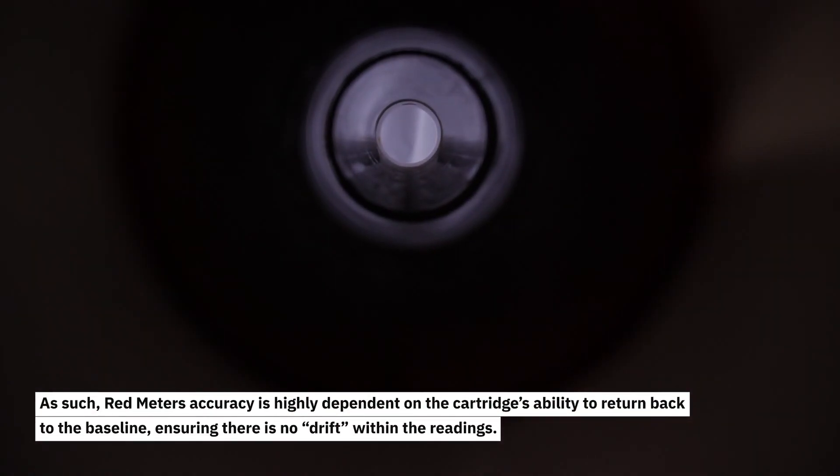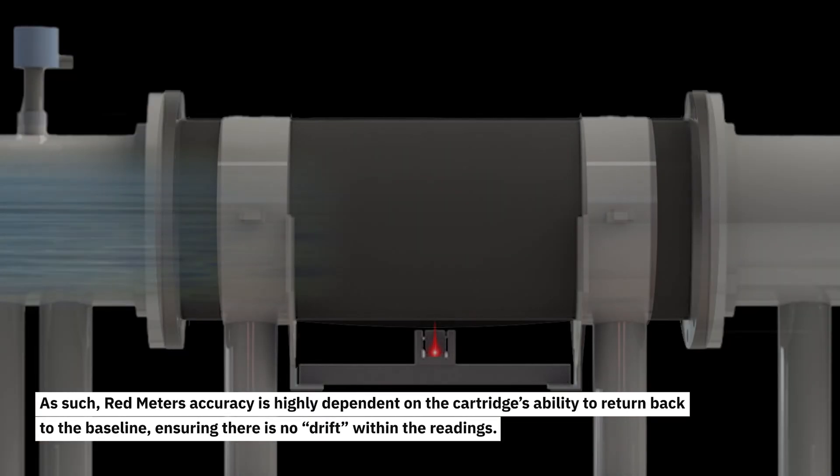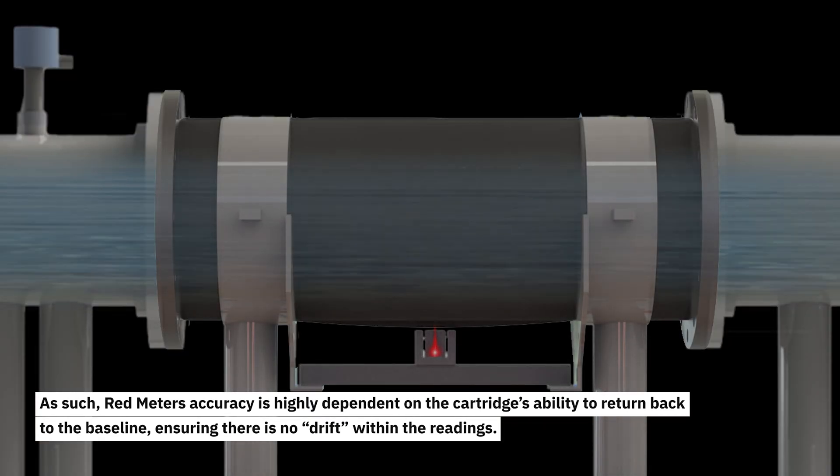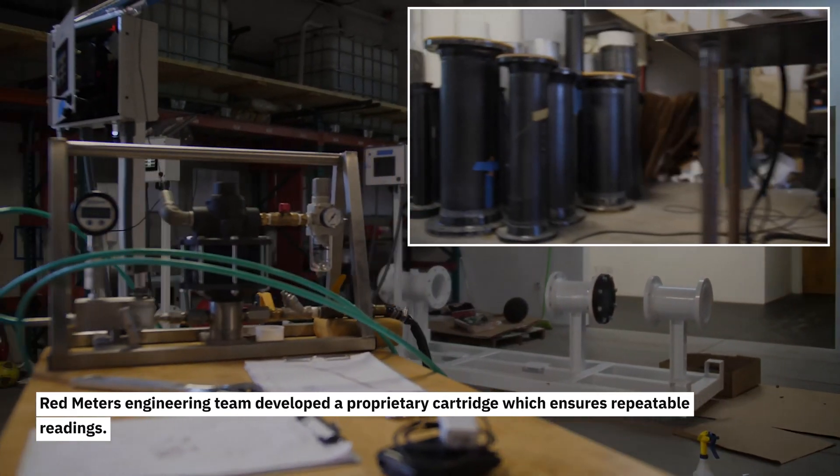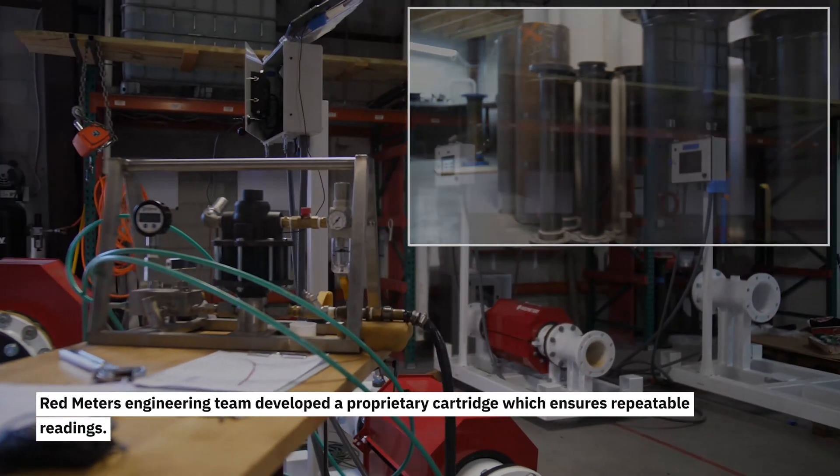As such, Red Meter's accuracy is highly dependent on the cartridge's ability to return back to the baseline, ensuring there is no drift within the readings. Red Meter's engineering team developed a proprietary cartridge which ensures repeatable readings.